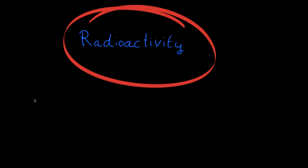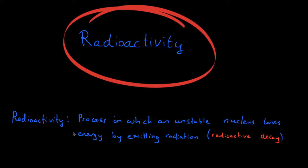So what is radioactivity? Well, radioactivity is the process in which an unstable nucleus - and what that means is that it doesn't like to be in the state that it's in - loses energy by emitting radiation, and that emitting of radiation is known as radioactive decay. So what we're saying is that there is some atom of a radioactive substance, that nucleus is not stable, and it wants to become more stable by emitting radiation, and therefore energy is contained in that radiation.